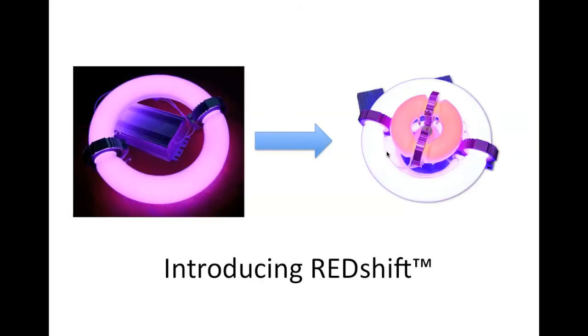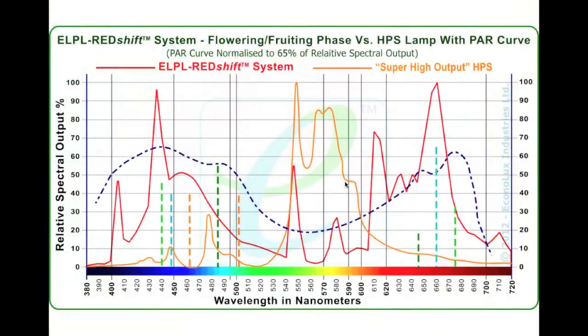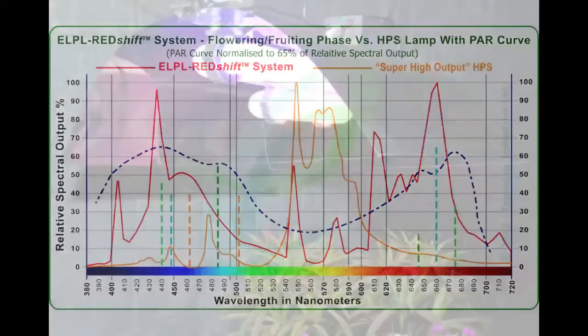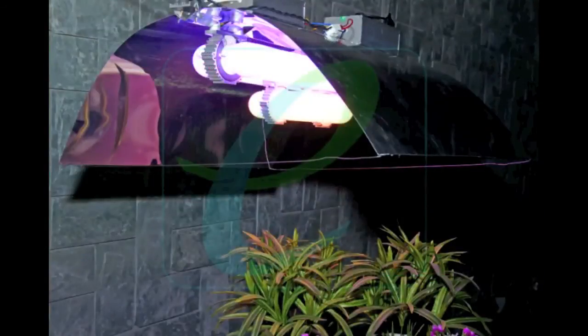So this is redshift, brand new idea in plant lighting, and we're very excited about how it works. Here's this curve, it's our redshift curve, with the lamp turned on. Look at how much we have in the red spectrum, look how broad this shoulder is of red light. The ability for the grower to turn on the redshift lamp at the time of flowering is fantastic.